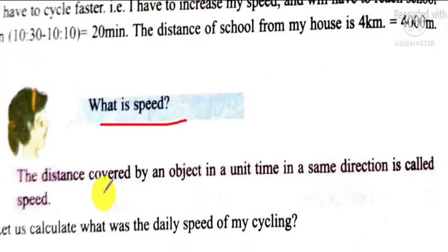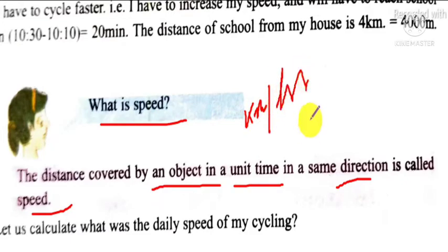The distance covered by an object in a unit time in the same direction is called speed. So speed always indicates a distance covered in a particular period of time, that is kilometers per hour or it may be millimeters per second.